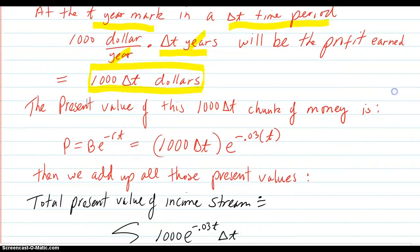So the present value of this thousand delta T chunk of money is, right here, P = Be^(-RT) as we've seen before in other videos. That's just solving from the balance of the principle E^(RT). Now we always have to be careful about what this T means up there, but we'll talk about that in a second.